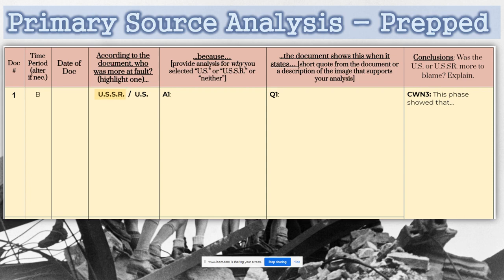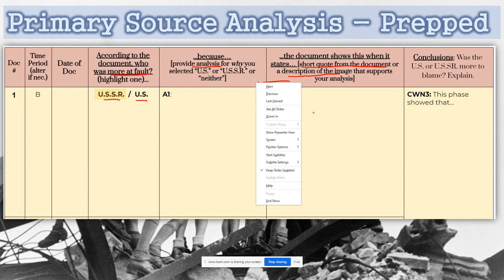What you're looking for is this: first, determine who's more at fault — read it with that in mind. Second, make an argument: decide whether the USSR or the United States is at fault, and provide a reason why — provide analysis. Then take a short quote. If it's an image, make a description of it — something that will support the analysis you're making, not just anything random.